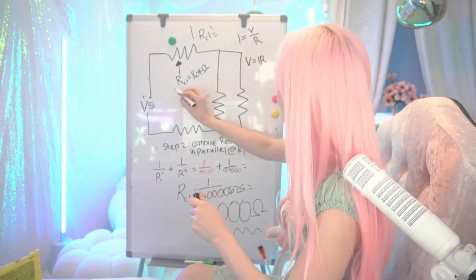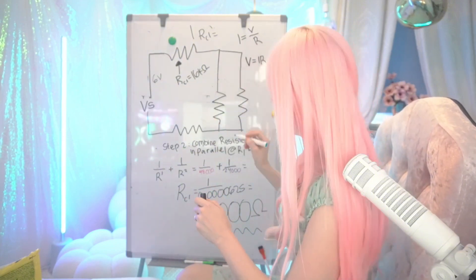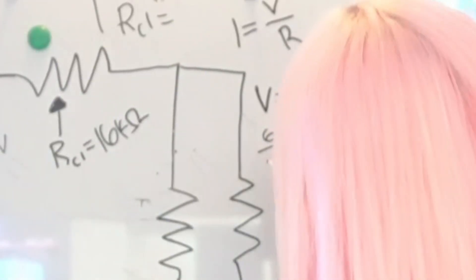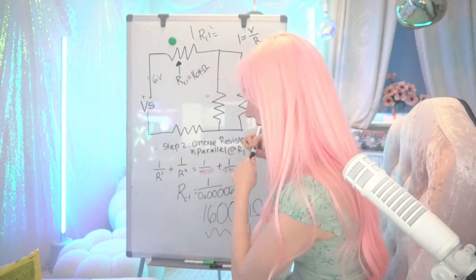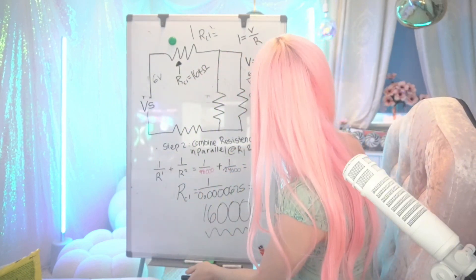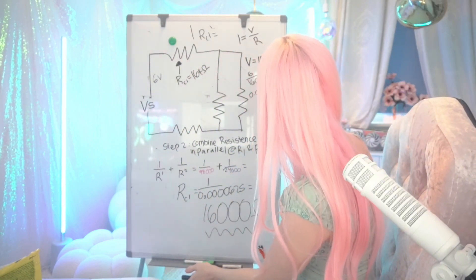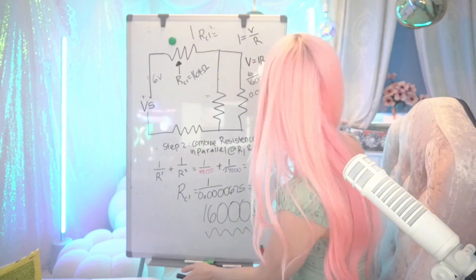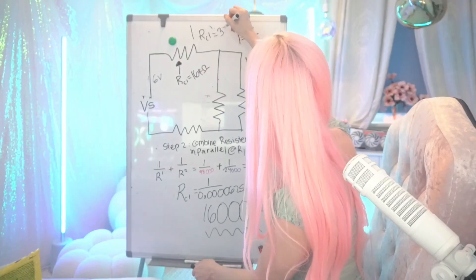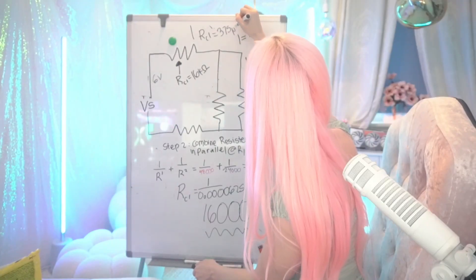To find I, we're going to take our volts, 6 volts, and we're going to divide it by R. So 6 divided by 16,000. Current right here is going to be 0.000375, 375 microamps.